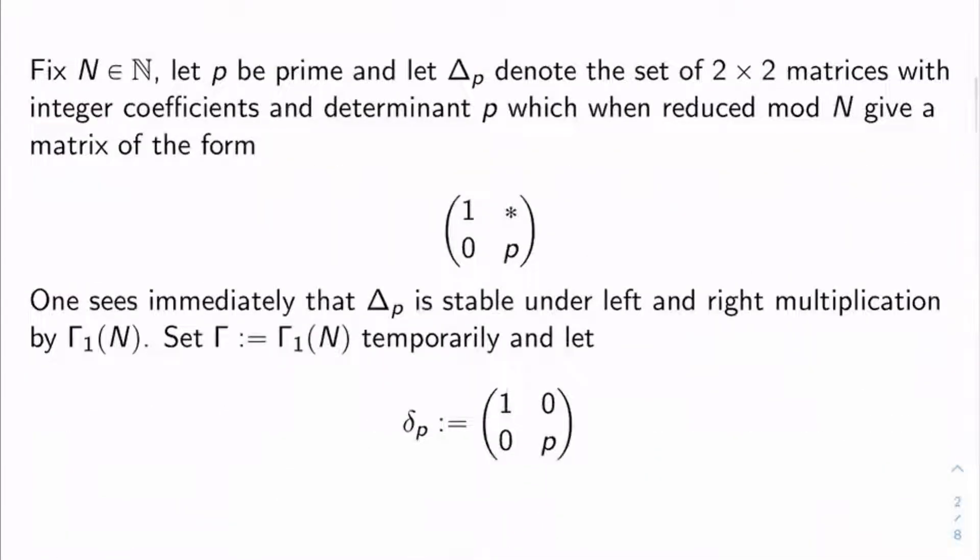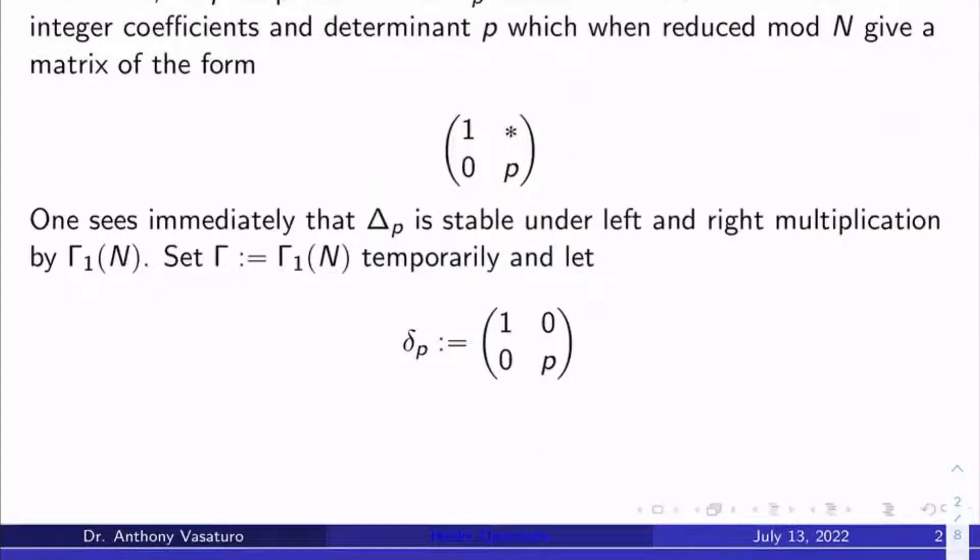So first, some notation. Let's let n be a natural number. Let's let p be a prime. Let's let delta sub p denote the set of two by two matrices with integer coefficients and determinant p, which, when you reduce their entries mod n, give you a matrix very simply of the form 1 star 0 p, where star is whatever you want. You can check immediately that delta sub p is stable under left and right multiplication by gamma sub 1 of n.